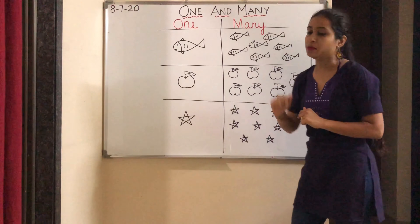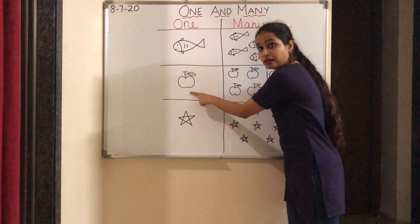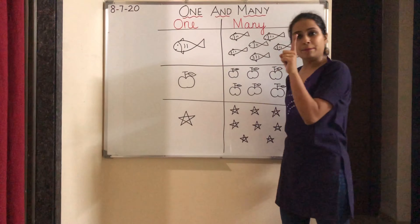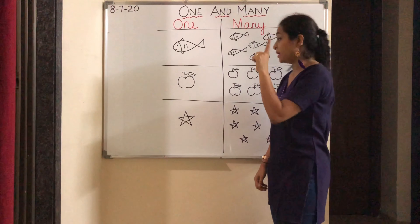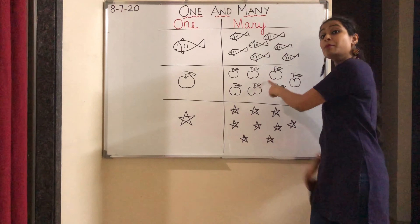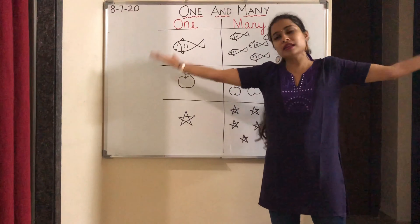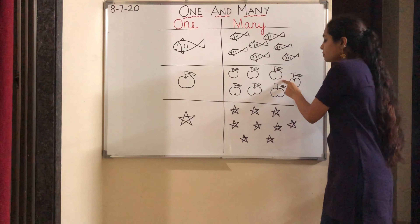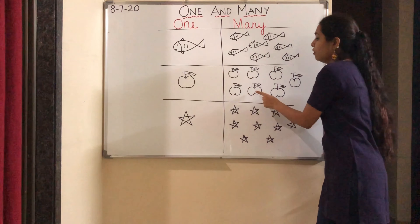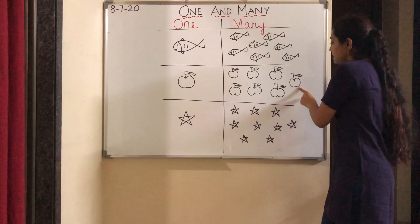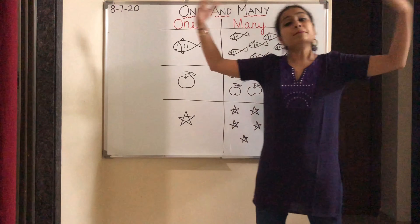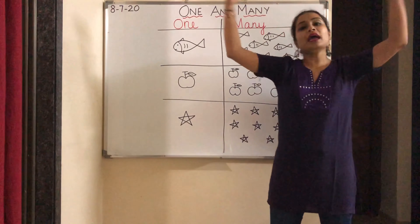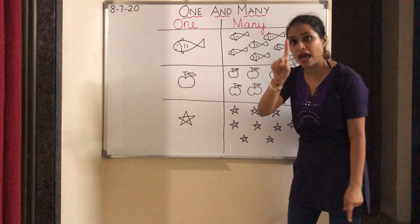Now let's see the second picture. What do you see? Apple! One apple. How many? One apple. And over here there are many apples. Let's count the apples. One, two, three, four, five, six, seven. Many apples. One apple, many apples.